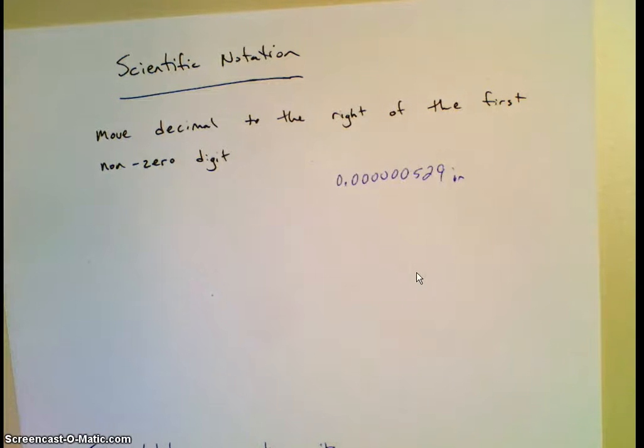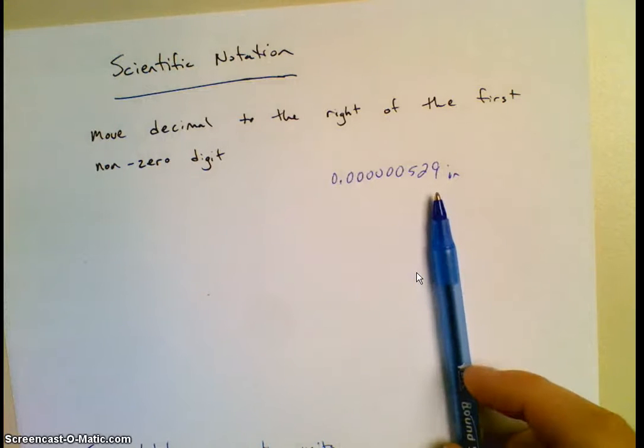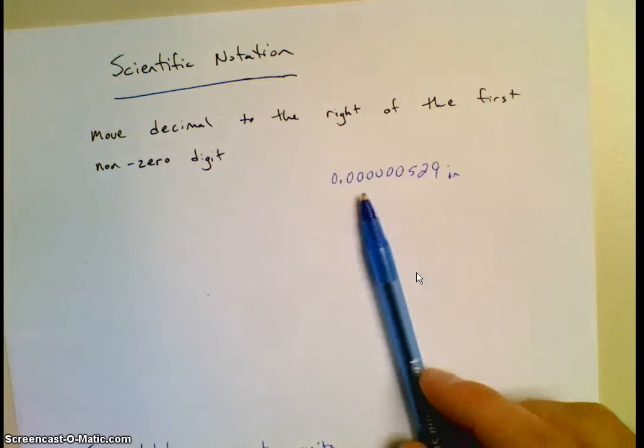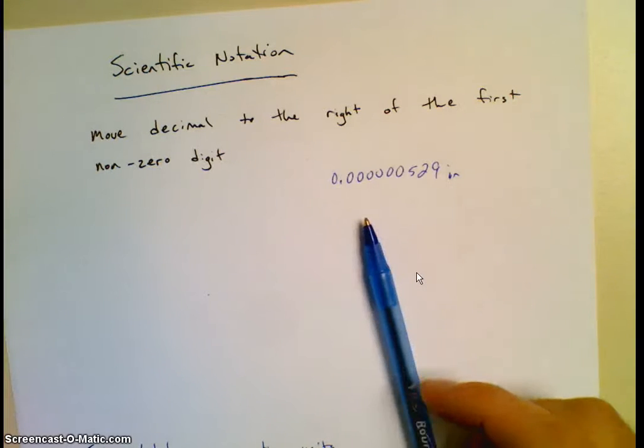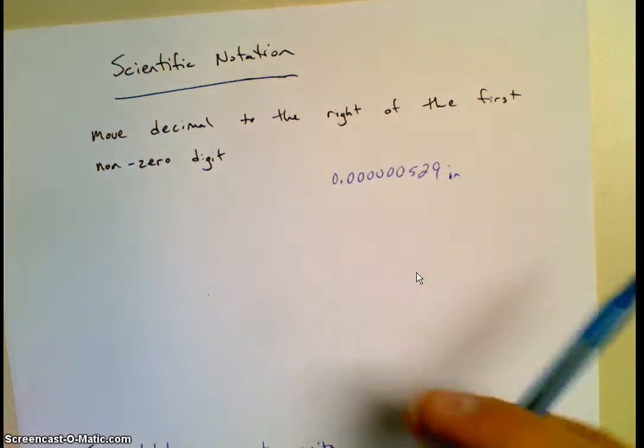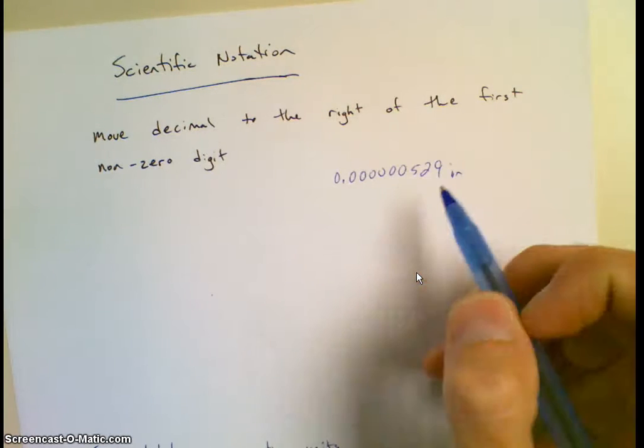Okay, if you're reporting a number to someone, I mean how would you say this over the phone to someone? I mean that would be 529 billionths or something like that, I guess you could do that. Or we could write it in a different way so it's easier to express, and then we don't have to write all these zeros.